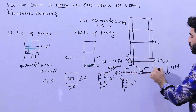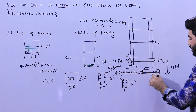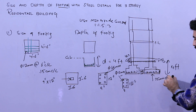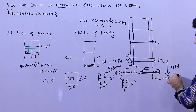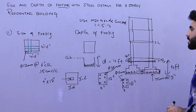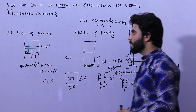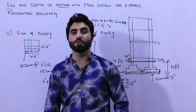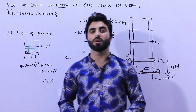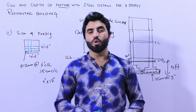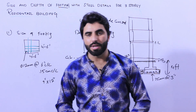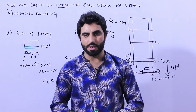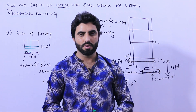Remember, all-side concrete cover should be 75 millimeters, or three inches. So this is a short video about size of footing, steel reinforcement, and depth of footing. Hope this short video can help you. Thanks for watching — see you in the next video, goodbye.